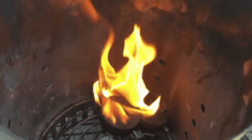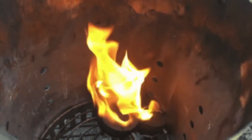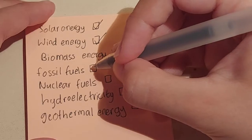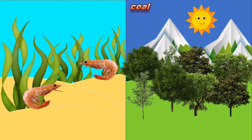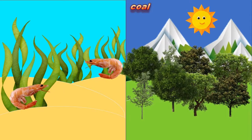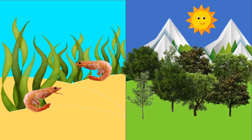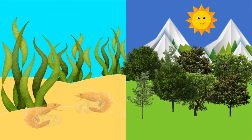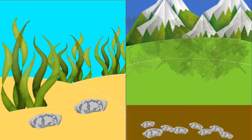Biomass energy is generated from decaying plants or animal waste. It can also be organic material which is burnt to provide energy. Fossil fuels, like coal, oil and gas, are hydrocarbons that were formed millions of years ago from the remains of dead organisms. Coal was formed from dead trees and other plant materials, while oil and gas were formed from dead marine organisms. After millions of years underground, the compounds that make up those organisms and plants turn into fossil fuels.